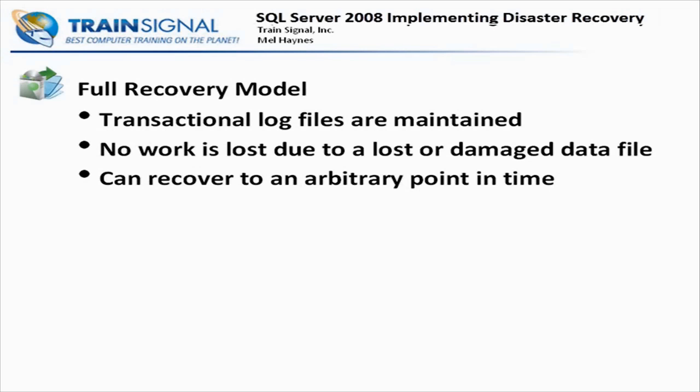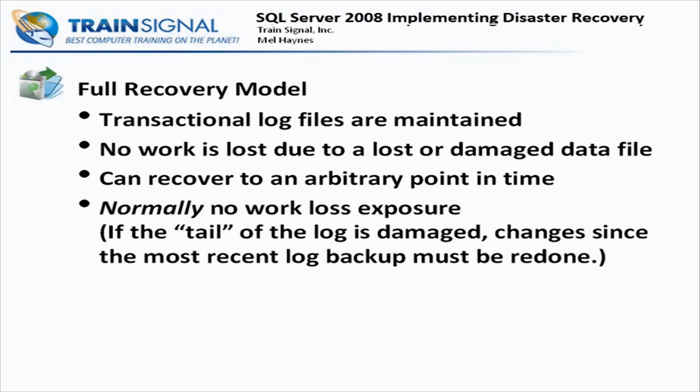This is the data provided by the full recovery model. You have what you need to recover to, say, 7:01 p.m. when something went wrong at 7:02 p.m. Normally, there's no work loss exposure — I say normally, because there are things that can go wrong even with a backup. If the tail of the log is damaged, and that last log backup is damaged, then any changes made since your most recent prior backup will be lost. You may have a backup file with other backups that need to be applied on top to get you current, and if the last one in that list is corrupted, you've got a problem.